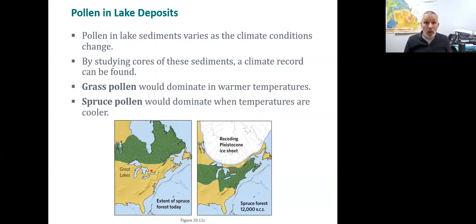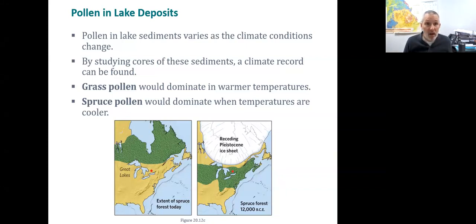One plant we use is spruce. Today, spruce forests are found primarily up in Canada. But if we look at 12,000 years ago during the Laurentide ice sheet — the last ice age — spruce forests extended further south into Iowa.